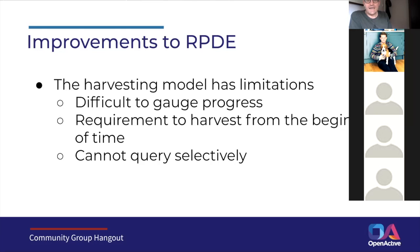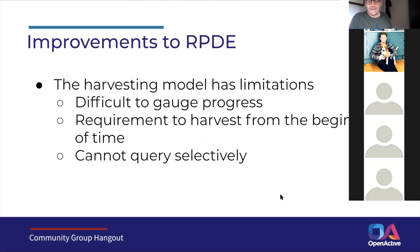A particular annoyance, and I suspect for data consumers as a whole, is that it's very hard to gauge progress. It takes a long time and you have no sense of how long you've got remaining — could be five minutes, could be days for larger feeds. You often end up with a lot of less relevant data, including past data with no requirement to delete obsolete records, and it's not possible to query RPDE selectively for a particular geographical location or activity type.